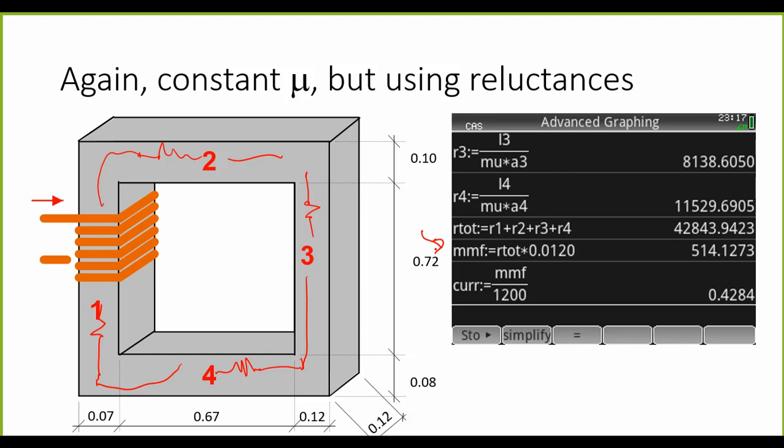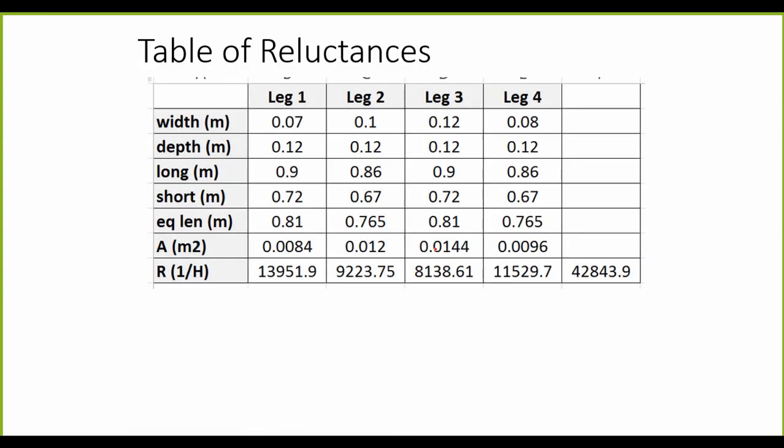We have not achieved any better solution than the method we've seen before, but it is just convenient. Here I've written the process for each one of the segments with the reluctances on the bottom and the total reluctance of the circuit on the last column to the right.